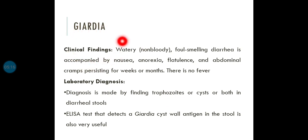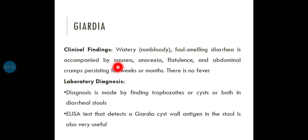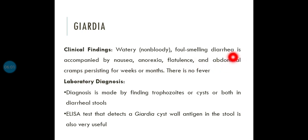Clinical findings: inflammation of the duodenal mucosa produces watery, non-bloody, foul-smelling diarrhea accompanied by nausea, anorexia (loss of appetite), flatulence (excretion of gases), and abdominal cramps — abnormal and painful contraction of abdominal muscle. These symptoms persist for weeks or months with no fever.